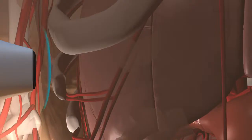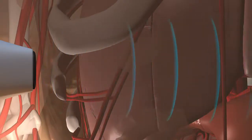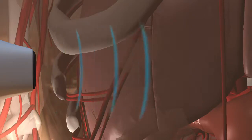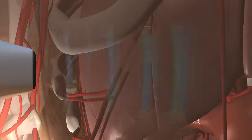When a transducer directs ultrasound waves into the body, they pass right through the skin and into the internal anatomy. As the waves encounter tissues with different characteristics and densities, they produce echoes that reflect back to the piezoelectric crystal.